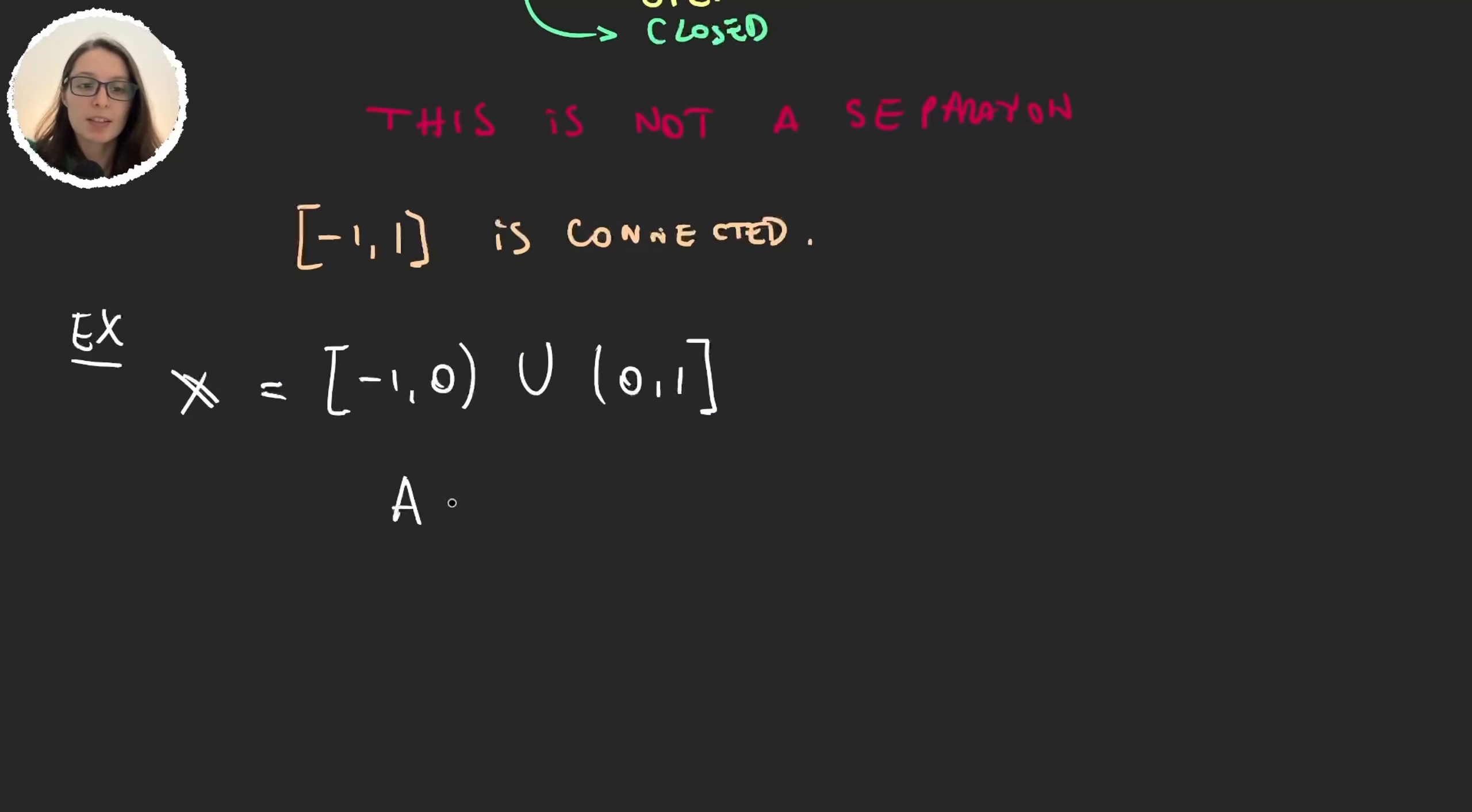Now I can take A to be [-1,0], B to be [0,1]. And now I have that A intersection B is empty and A union B is the whole set. So is this a separation of X? What do you think? Well, we fell for this trap before.